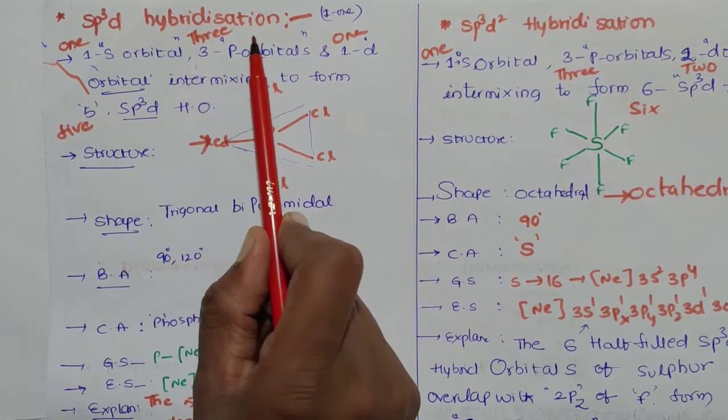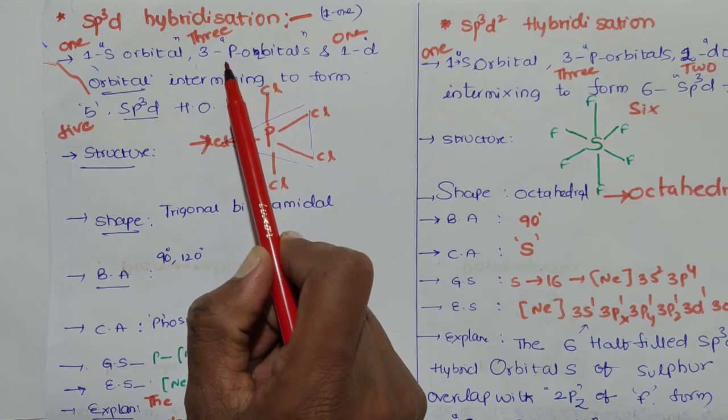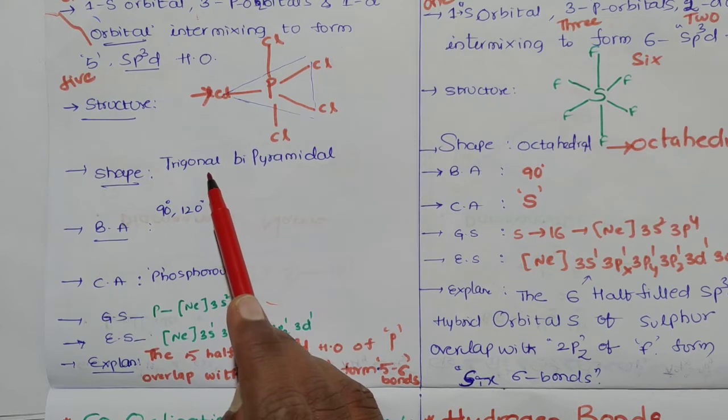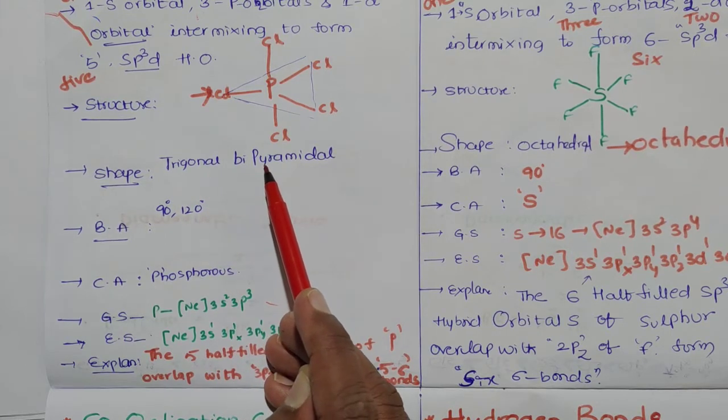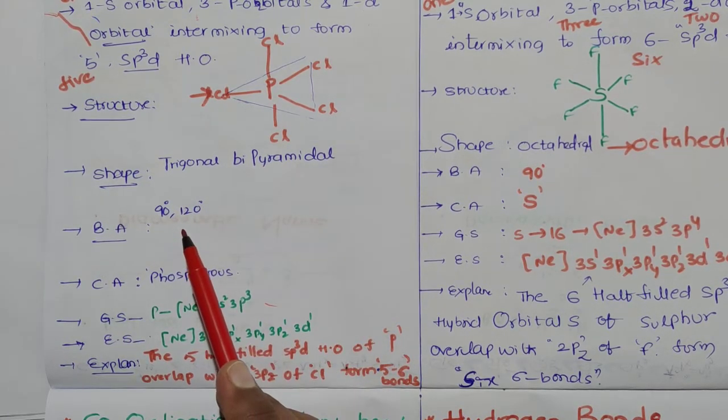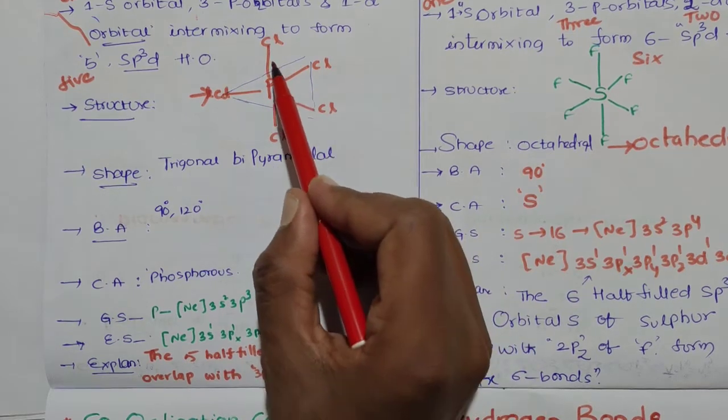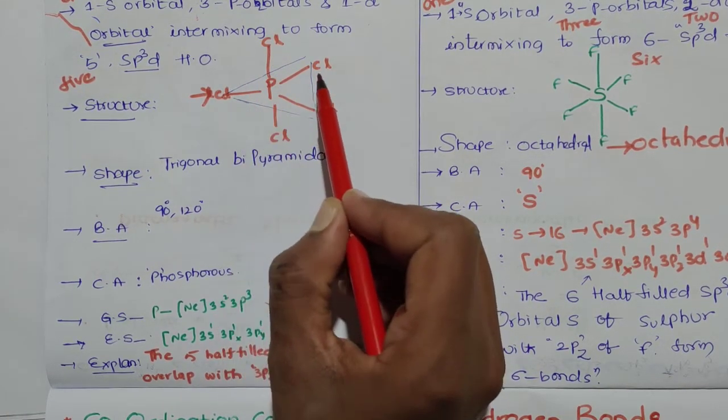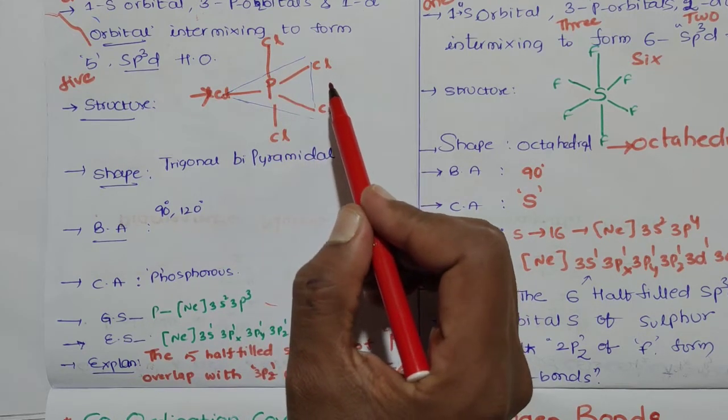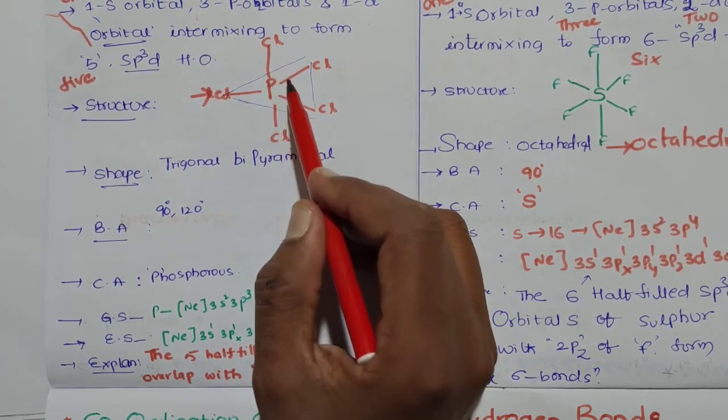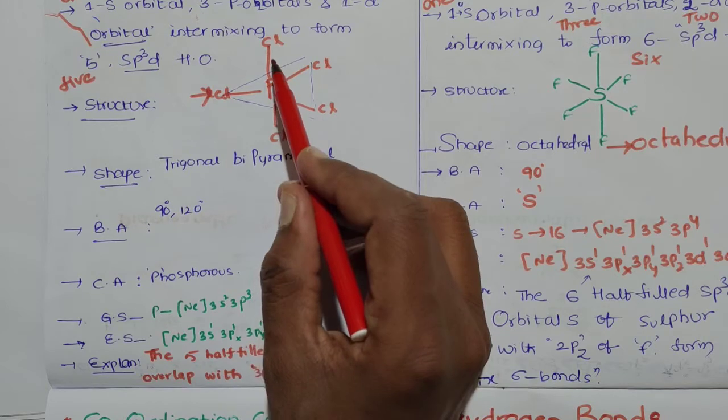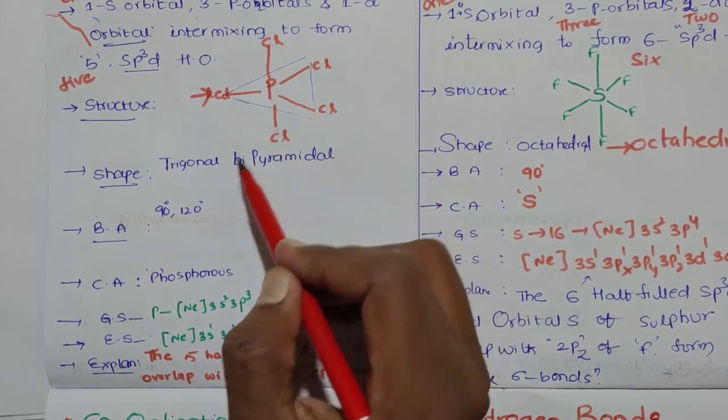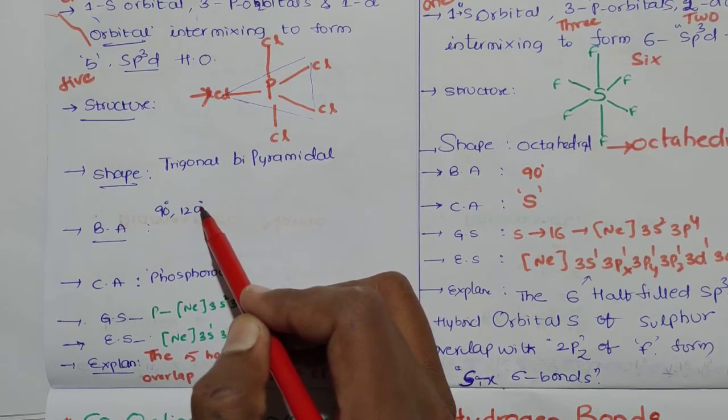The structure is trigonal bipyramidal. What is the bond angle here? 90 degrees for phosphorus-chlorine. Three chlorines are within the plane, one above the plane, one below the plane. The chlorines above and below the plane are 90 degrees. The chlorines which are in plane have 120 degree bonds.